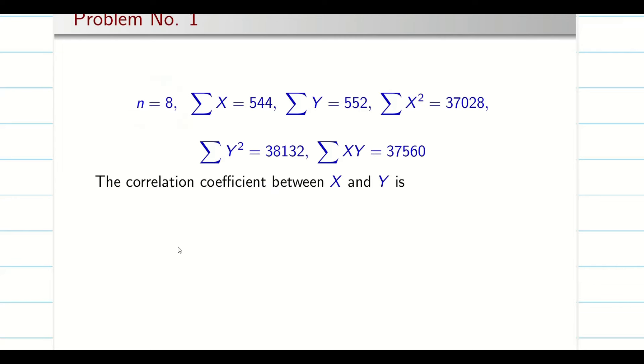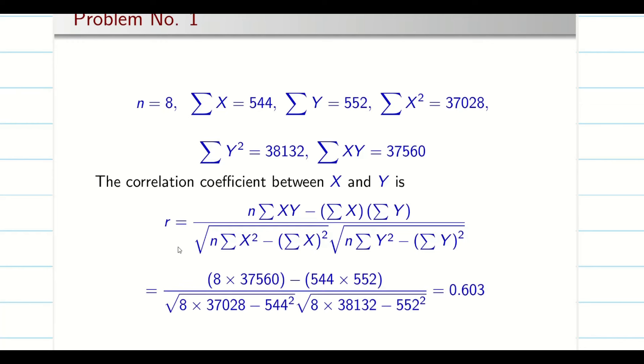Now we have the classical formula, the correlation coefficient between x and y. Substitute all the data here and calculate the value. You found the correlation coefficient is 0.603. So that means x and y are positively correlated.